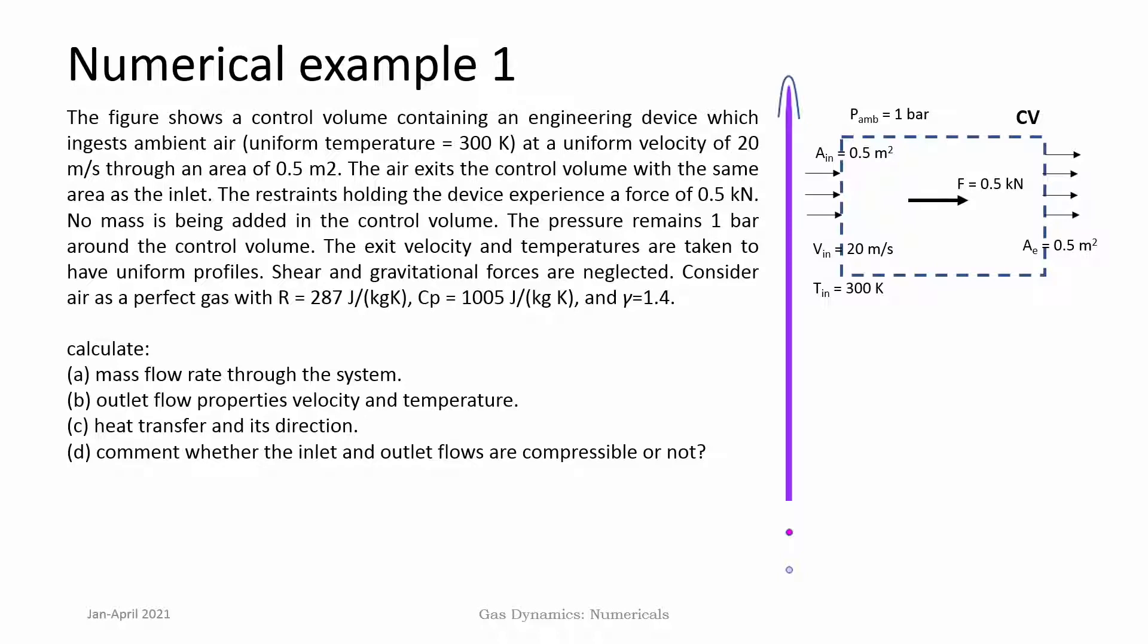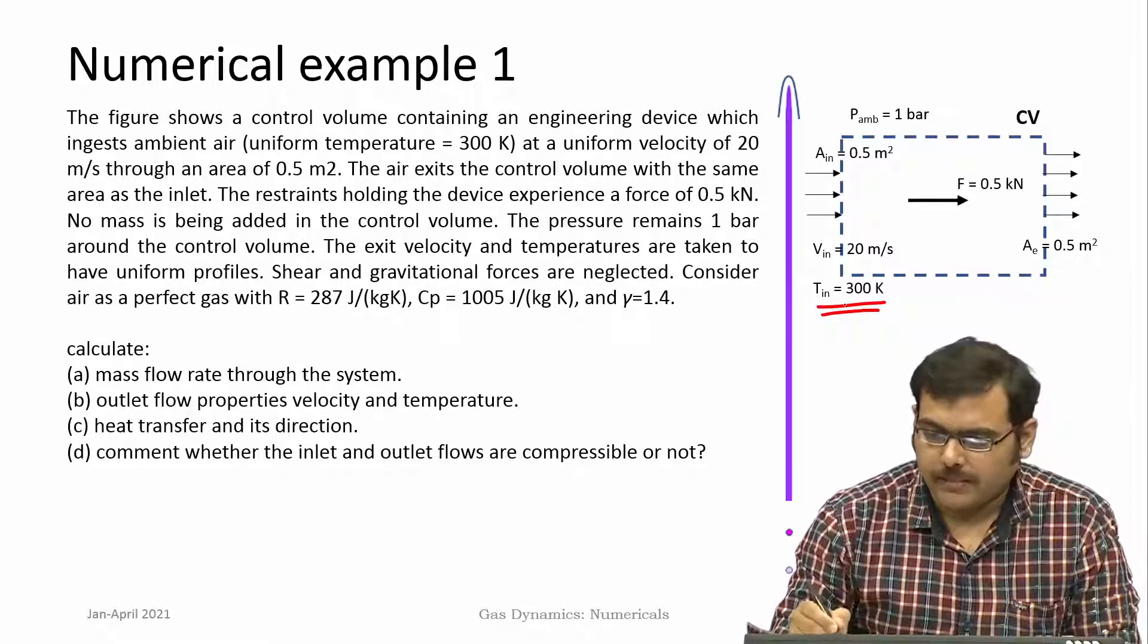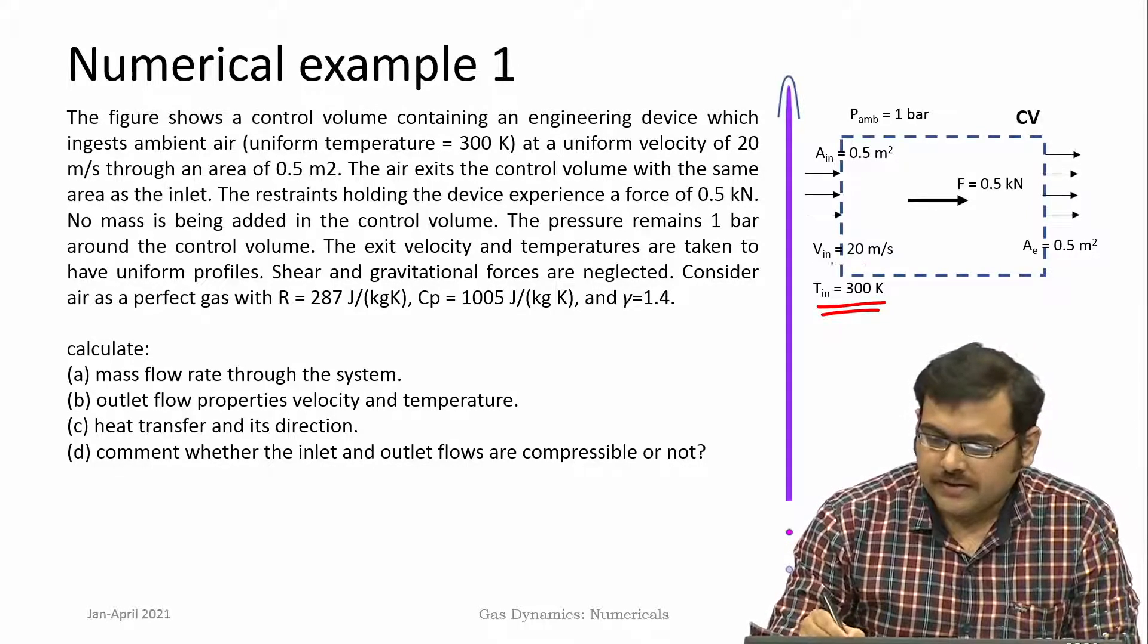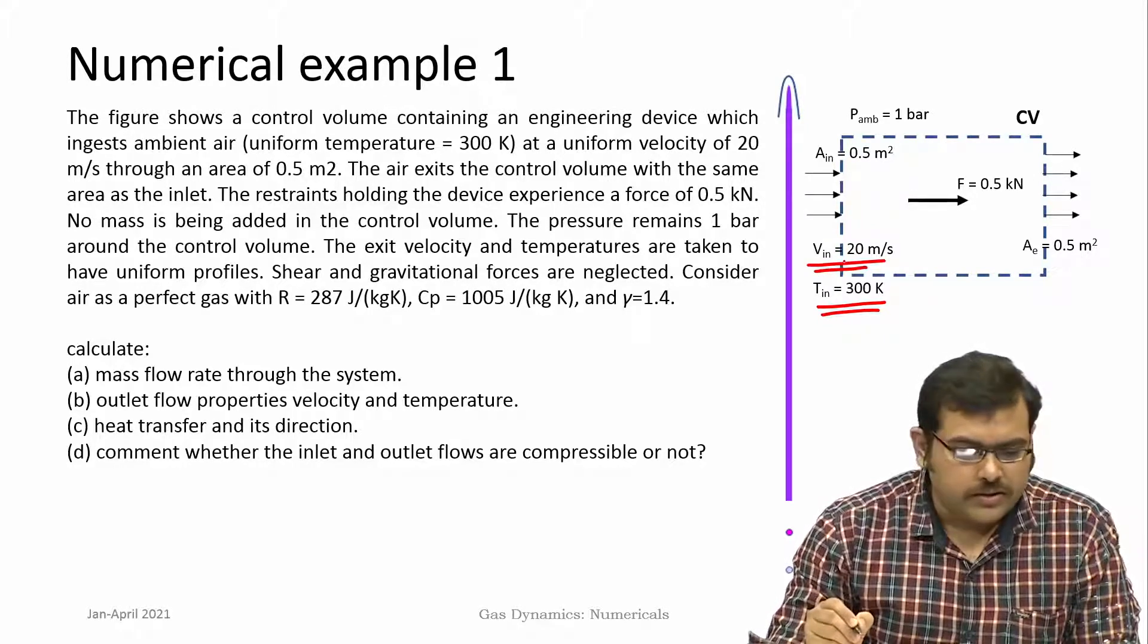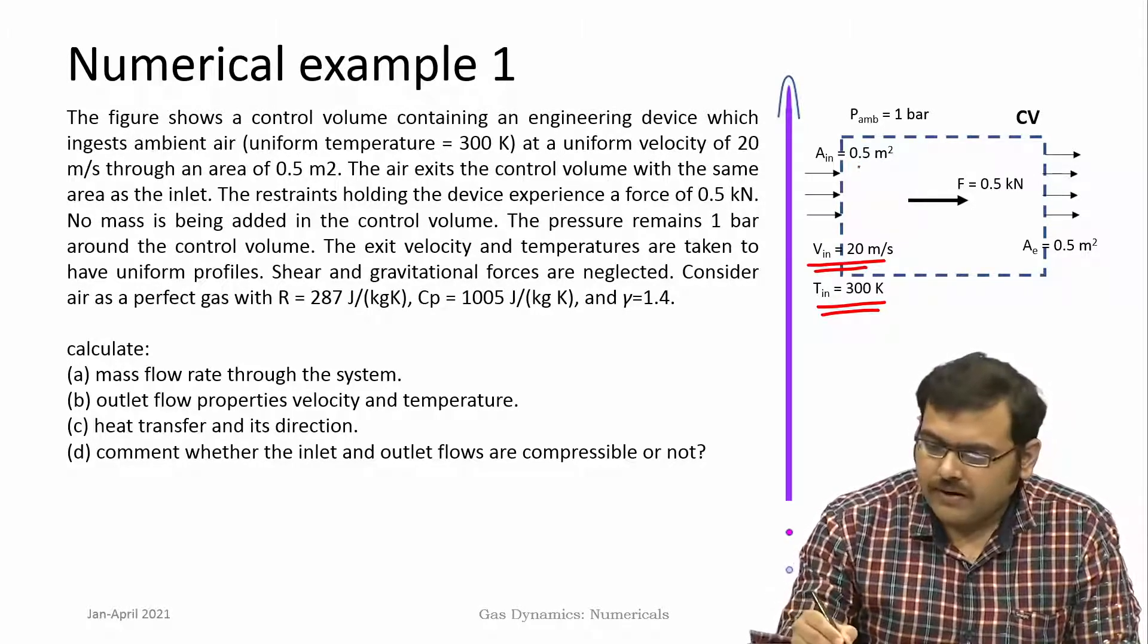Take this particular numerical example. The figure shows a control volume containing an engineering device which ingests ambient air at uniform temperature of 300 Kelvin and velocity of 20 meter per second through an area of 0.5 meter square.